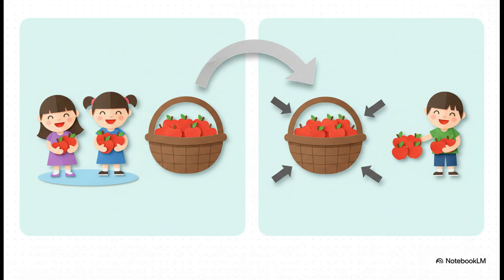You want to know a secret? A little cheat code that makes division so much easier? It's basically the opposite of multiplication. Think about it. If you know that two friends times five apples each equals ten apples, you can just flip that right around. Ten apples divided by two friends means five apples each. They're in like a perfect team, working forwards and backwards.